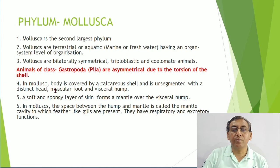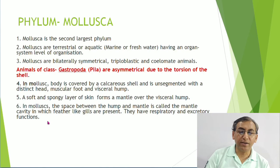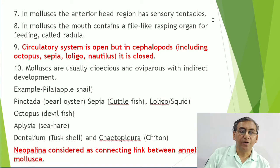In Mollusca, the body is covered by a calcareous shell. It is unsegmented, and the body is divided into head, muscular foot, and visceral hump. A soft and spongy layer of skin forms a mantle over the visceral hump. The space between the hump and mantle is called the mantle cavity, in which feather-like gills are present, performing both excretory and respiratory functions. The anterior head region has sensory tentacles, and in the mouth a file-like rasping organ is present known as the radula.